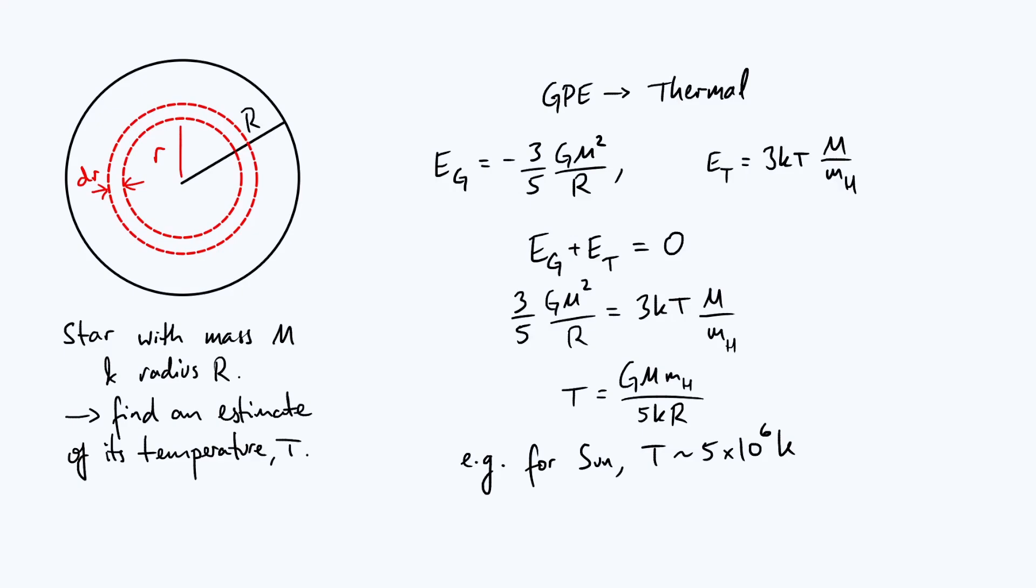It does make sense physically that the answer that we've got is a bit smaller than the core temperature of the sun, because remember, we assumed that everything was uniform. And so what we've got is really some sort of average temperature throughout the sun. So maybe partially, we just got lucky that the model happened to give us a number that's very close to an actual physically sensible number. But I always find it really interesting when these simple calculations leads to surprisingly accurate answers.